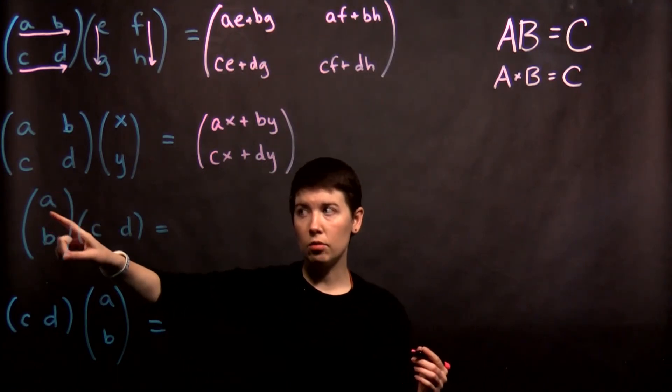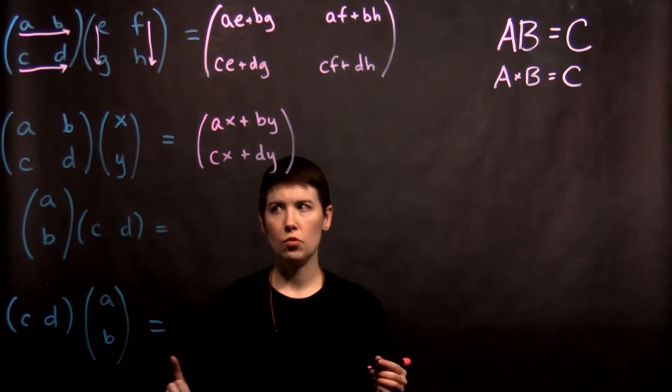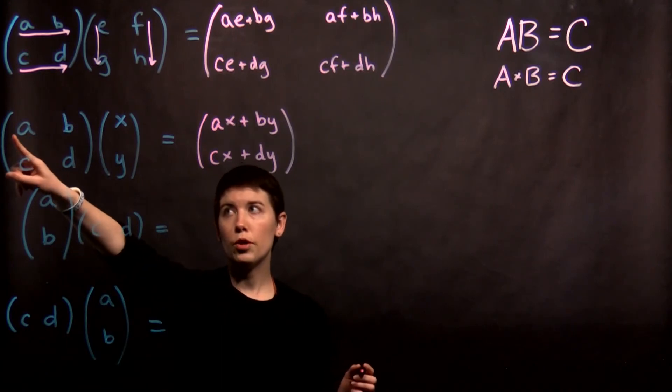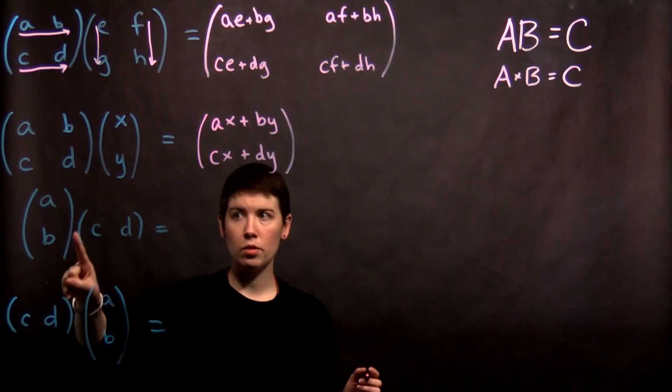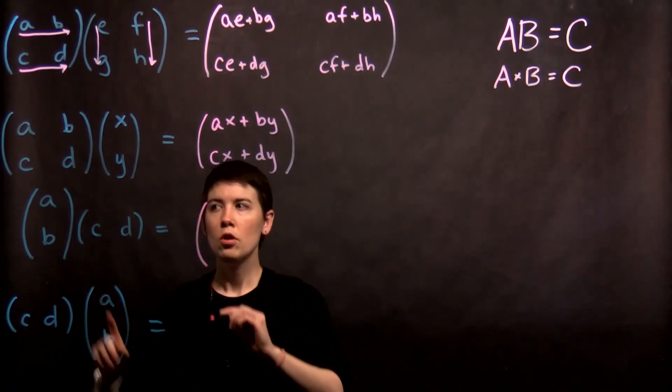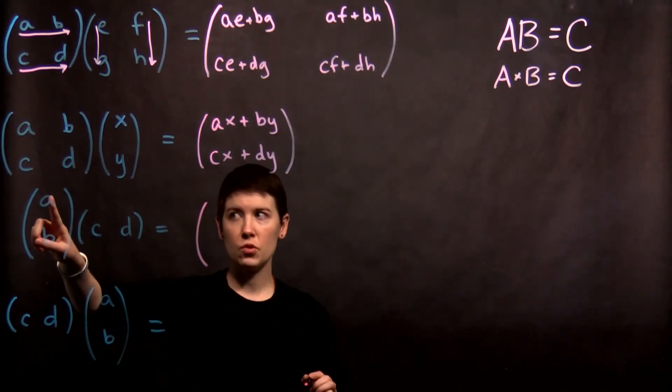Now when we get down to just vectors, we have to think through a little more carefully. Here we have gone row times column. Notice that this is two rows and this is two columns.